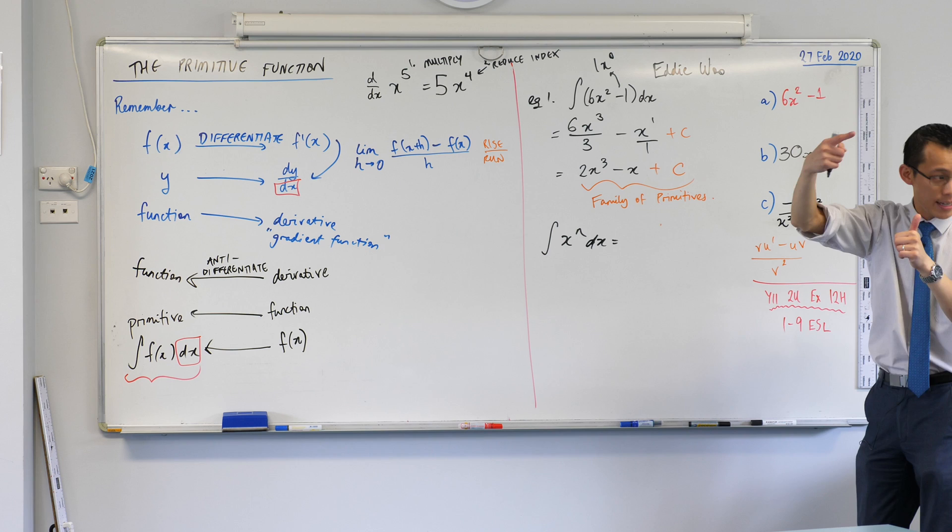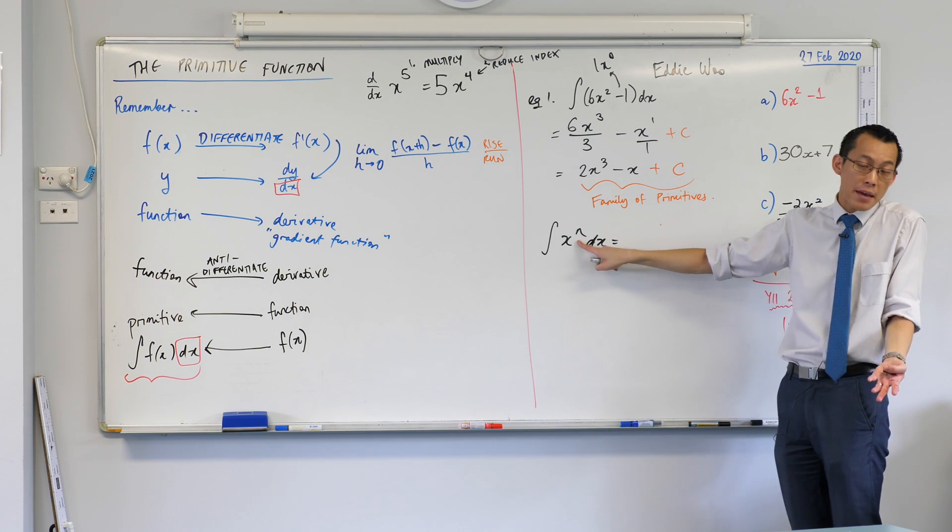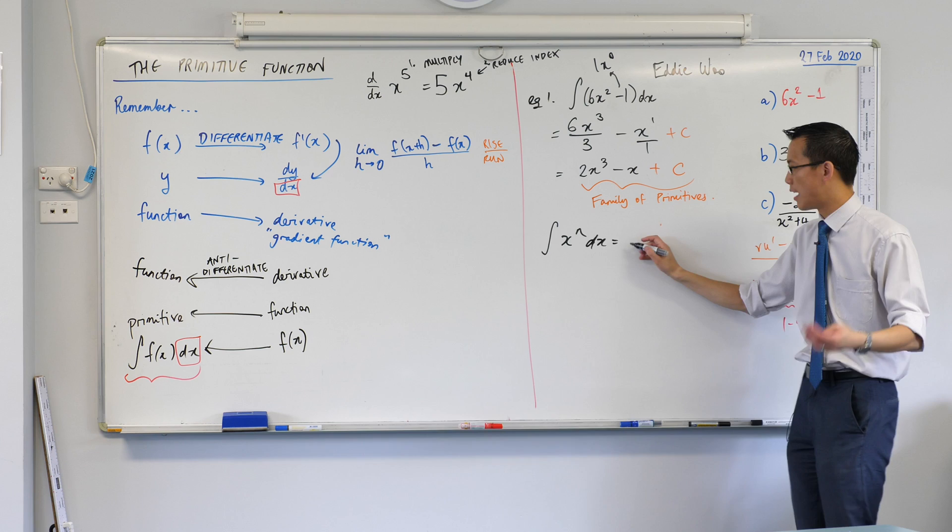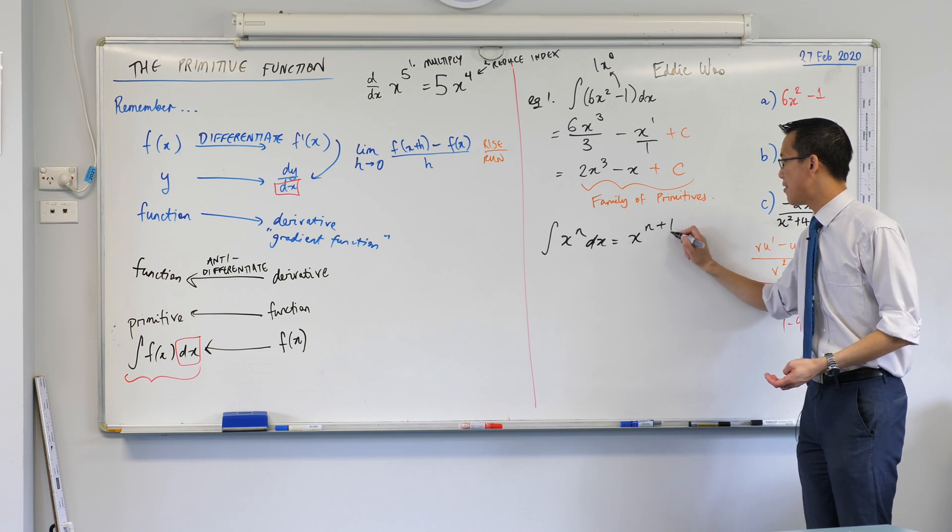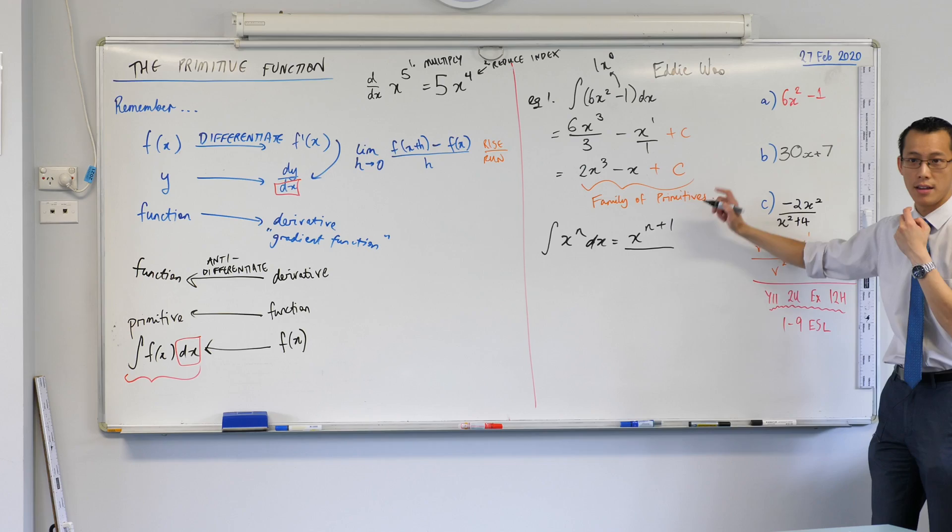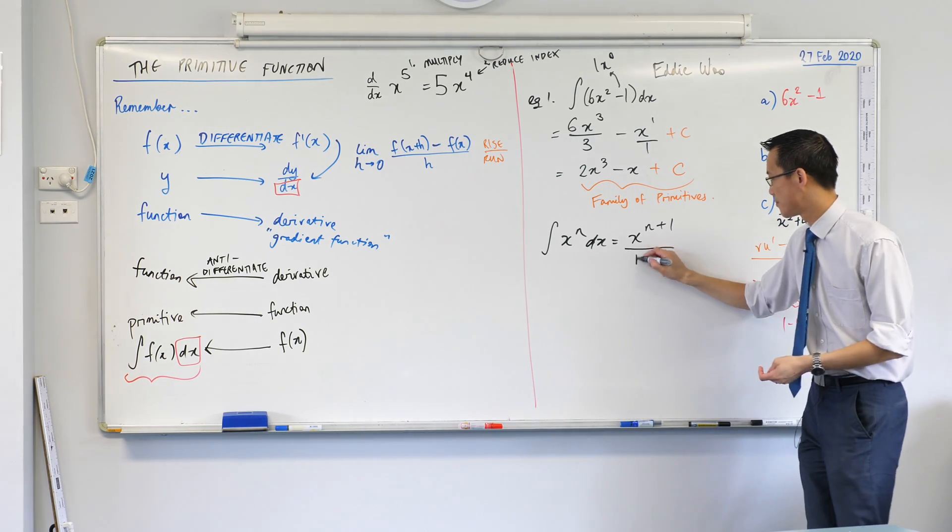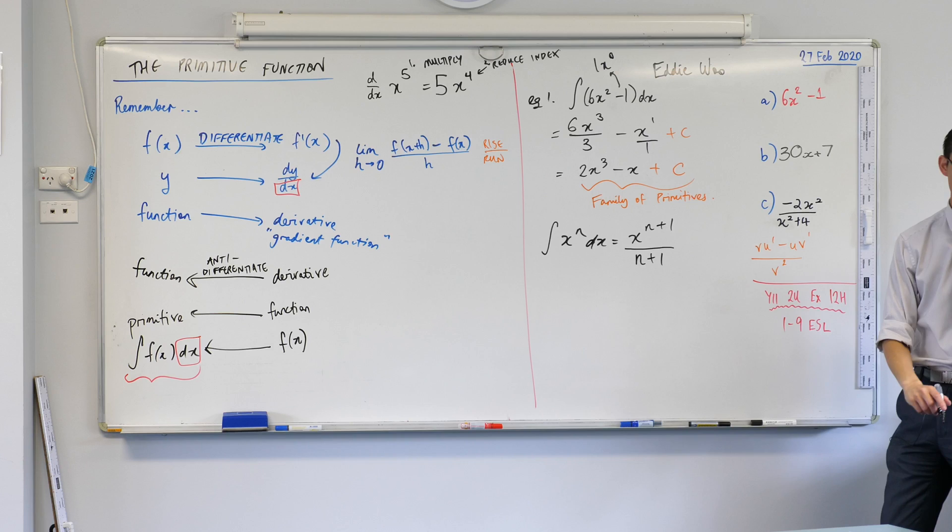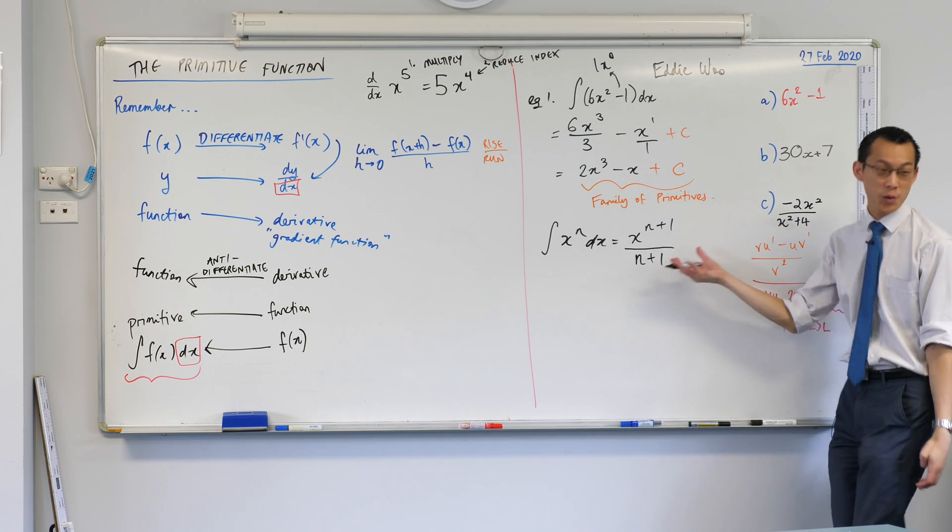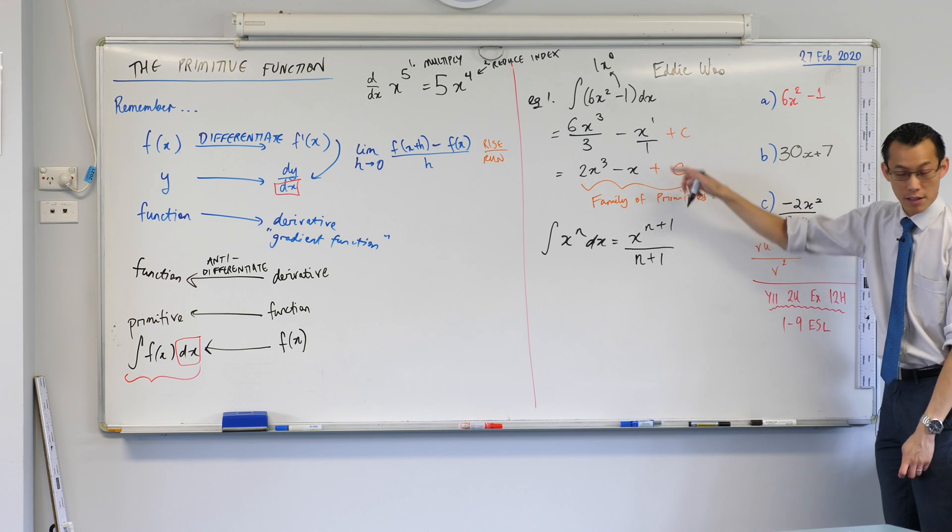Step 1, we increased the index by 1. So the index is currently n. What would it be if I increased it by 1? n plus 1. And then the second thing I did was, I divide by this new power, which is n plus 1. Like so. There was one last thing I needed to do because this is not the only thing that would differentiate to that. I have to include this plus c.